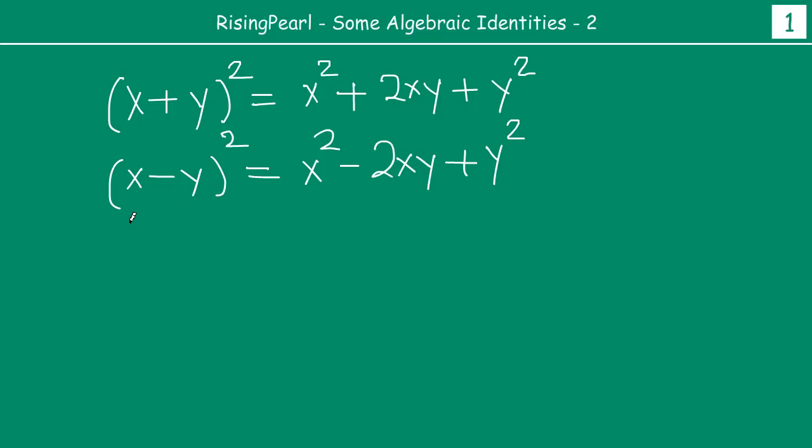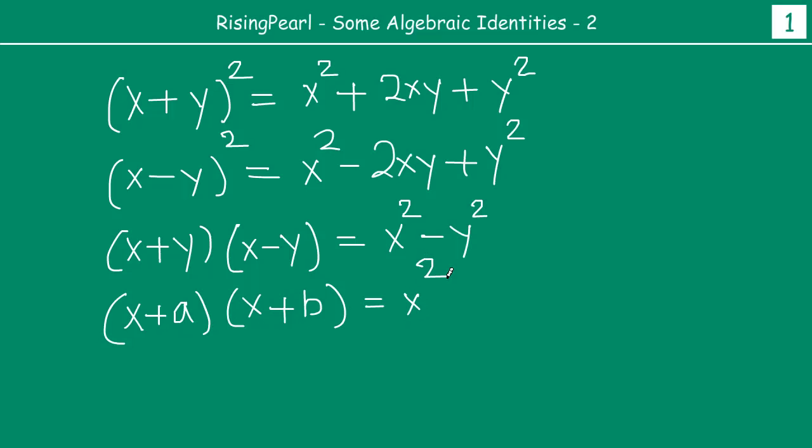Then we saw that if you have x plus y multiply by x minus y, then you get x square minus y square. And you can write x square minus y square is equal to x plus y times x minus y. And then we saw that if you have x plus a times x plus b, if you multiply x plus a times x plus b, then what you get is x square plus a plus b times x plus ab.